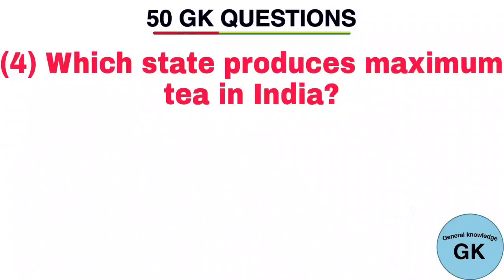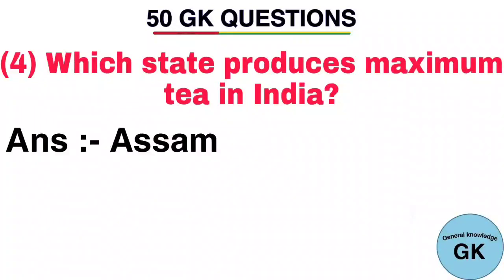Question number 4. Which state produces maximum tea in India? Answer: Assam.